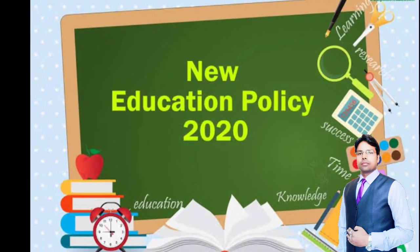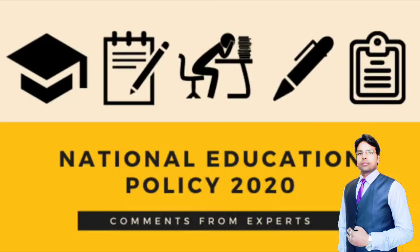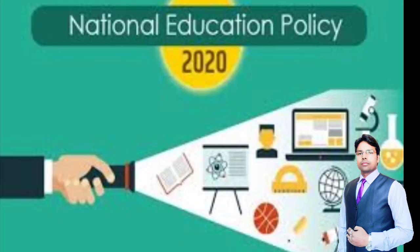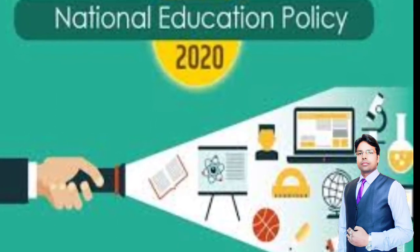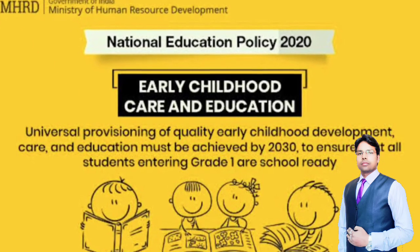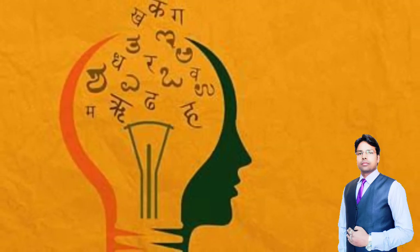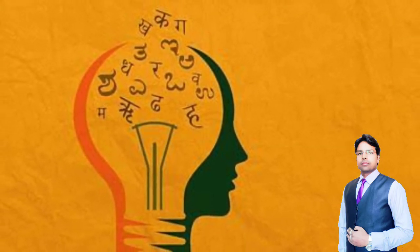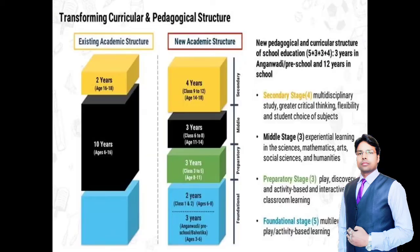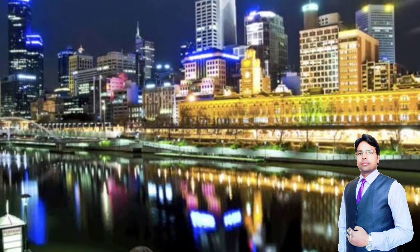Now let us understand the New Education Policy 2020. The Modi government announced the New Education Policy 2020, which was approved by the Union Cabinet of India on 29th July 2020. It brings about several major reforms in the education system in India. The policy aims to transform India's education system by 2030. One major reform is that the school education system has been converted from the 10+2 to a 5+3+3+4 system, which is based on the educational systems of many developed countries.